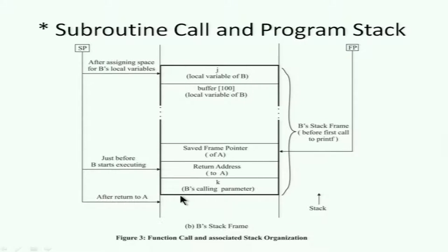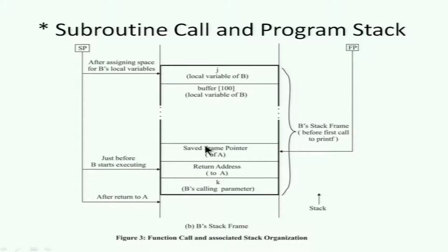The stack pointer is initially pointing here. Just before A calls B, it pushes the parameters. Then the call instruction in assembly language pushes the return address, because you need to know where to return when subroutine B finishes. There's something called a frame pointer, which is then pushed. All the automatic or local variables in subroutine B then occupy the rest of the space. This is the convention.